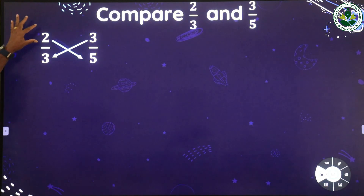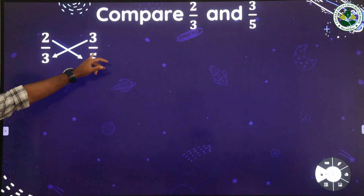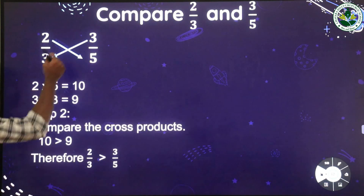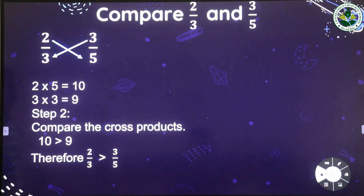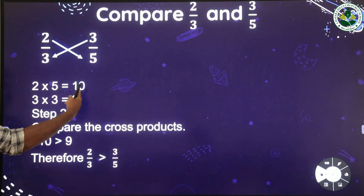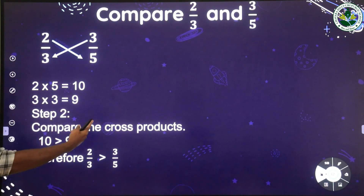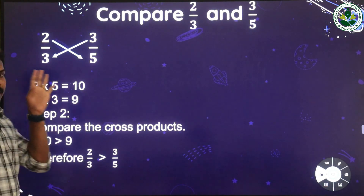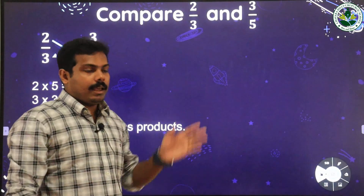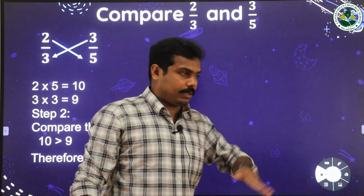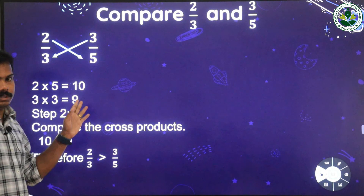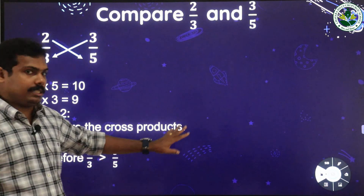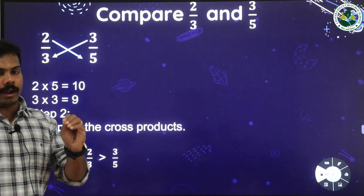To summarize: cross multiply the numerator of the first fraction by the denominator of the second fraction — 2 into 5 is 10. Then 3 into 3 is 9. Compare the cross products: 10 and 9. Since 10 is bigger, 2 by 3 is bigger. So the two methods to compare unlike fractions are: first, the LCM method — find the LCM of the denominators and convert to like fractions; second, the cross product method — just cross multiply the fractions and compare the numbers.